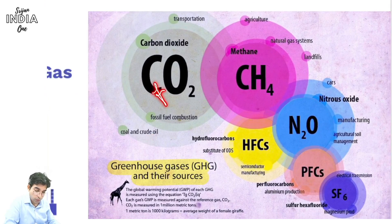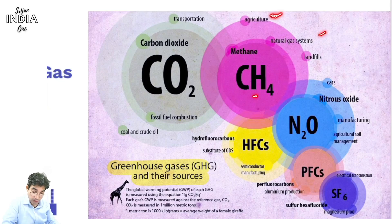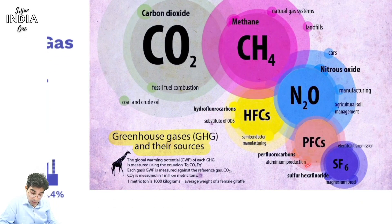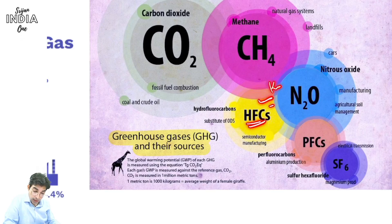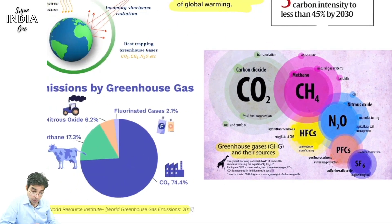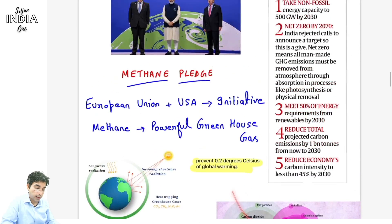The point is CO2 pe focus is not sufficient - methane ko bhi target karna padega, toh uske liye hai yeh methane ka pledge. Emission by greenhouse gases dekhein toh CO2 75% ke aaspaas hai - sabse zyada emission CO2 se. Methane around 18% hai, nitrous oxide around 6%, fluorinated around 2%. Toh CO2 target karein, ab methane ko bhi target karein.